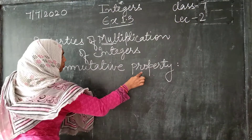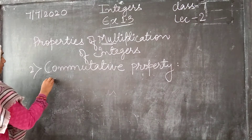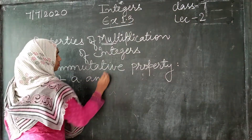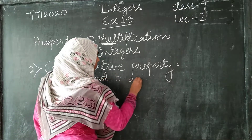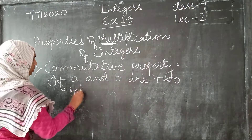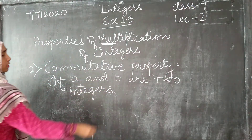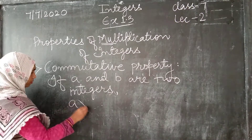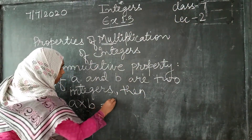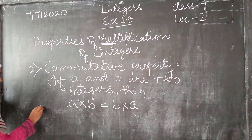The second property is the commutative property. What this commutative property says is: if A and B are two integers, then A multiplied by B is equal to B multiplied by A.